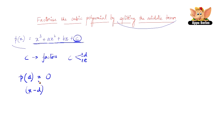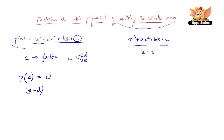Now, since x minus d is a factor of this expression, we need to go ahead and divide x cubed plus ax squared plus bx plus c by x minus d. When we divide this, we are going to get a quadratic equation.